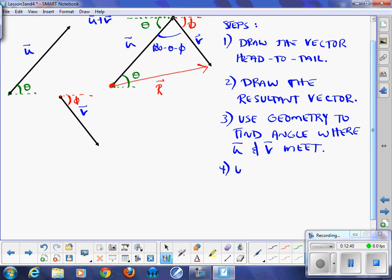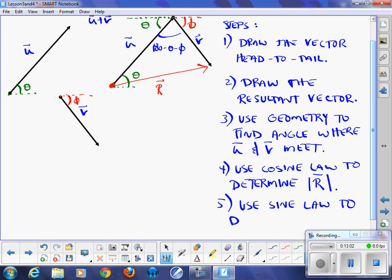Step four. Use cosine law to determine the magnitude of your resultant. Which we can simply replace all that with magnitude R. And the fifth. We then use our sine law to determine our direction. So use the sine law to determine the direction.